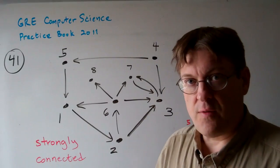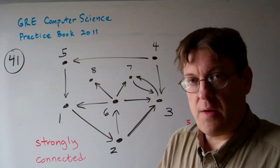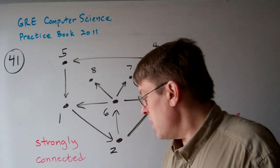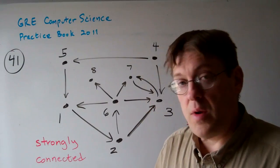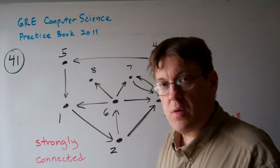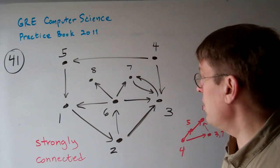Every vertex can reach every other vertex in a given graph. If you have a strongly directed component, then every node can reach every other node in that component.